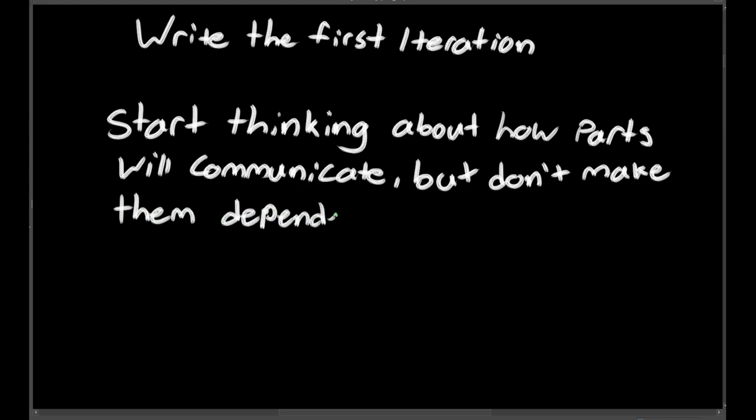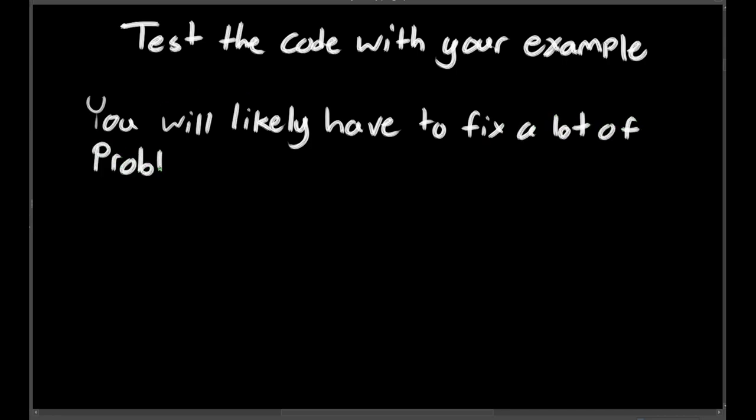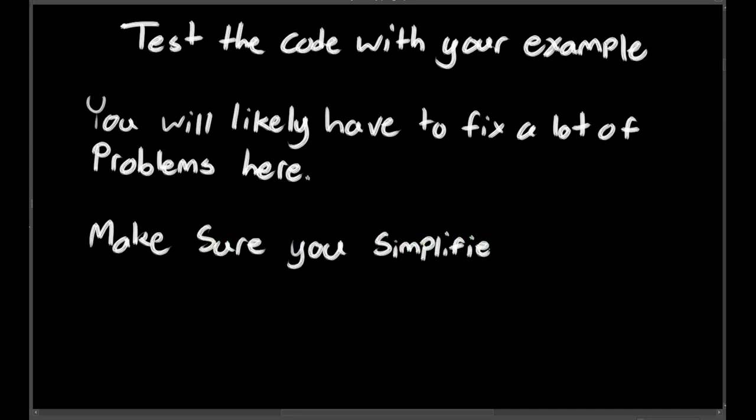Once you finish your first iteration, you should try running through it with your example and make sure it works. If it doesn't work, there's a few ways you can solve any issues and how you do it depends on how big the problem is. If it's something like forgetting a variable, then you can just add that into the code, but for bigger issues you may want to revisit your pseudocode to fix it, or in some cases you might have to break the problem down even further. If you just can't get it to work for your example at all, you may need to go back and try to think of a different approach. But if you find yourself in this situation, you probably didn't simplify the problem enough to start with.